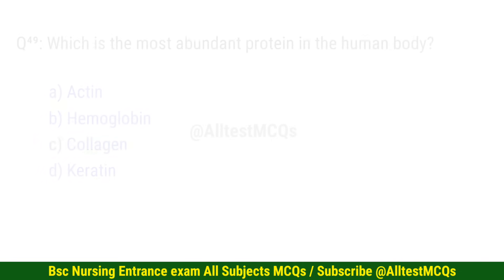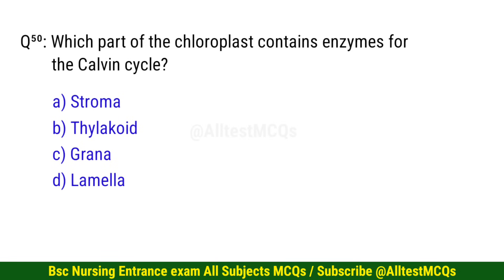Question number 50. Which part of the chloroplast contains enzymes for the Calvin cycle? The right option is A: Stroma.